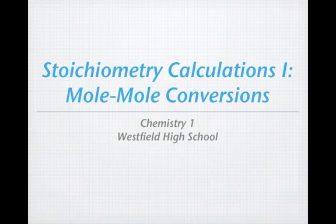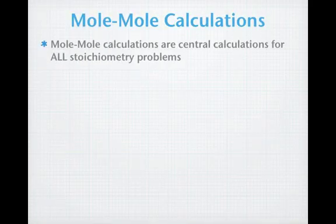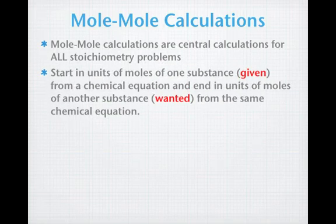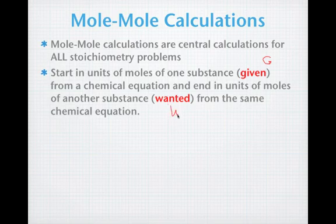In our next lesson on stoichiometry, we're going to learn how to apply the ratios that we learned about in the last lesson to perform calculations involving moles to moles of one substance to another in a chemical equation. The mole-to-mole calculations are very important because these calculations are central to all stoichiometry problems. In these problems, we're going to start in units of moles of one substance — we're going to call that the given, denoted by a capital G — and we're going to end in units of moles of another substance, that we'll call the wanted, or W, in the same chemical equation.